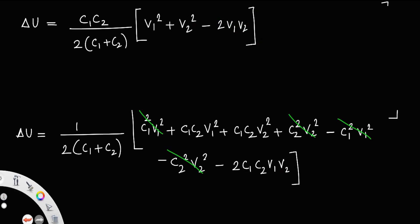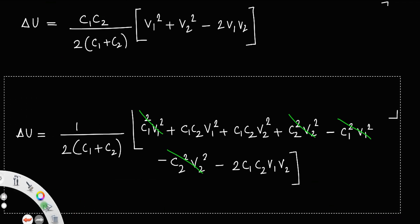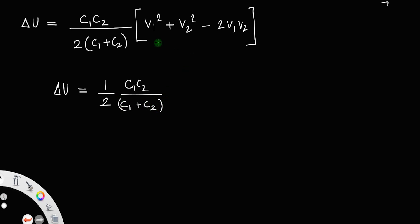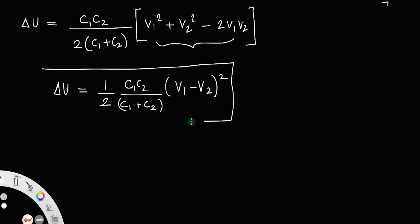This is the final expression for the loss of energy. It can be rearranged as: delta u equals (1/2) × (c1c2)/(c1+c2) × (v1 − v2)², since v1² + v2² − 2v1v2 equals (v1 − v2) whole squared.